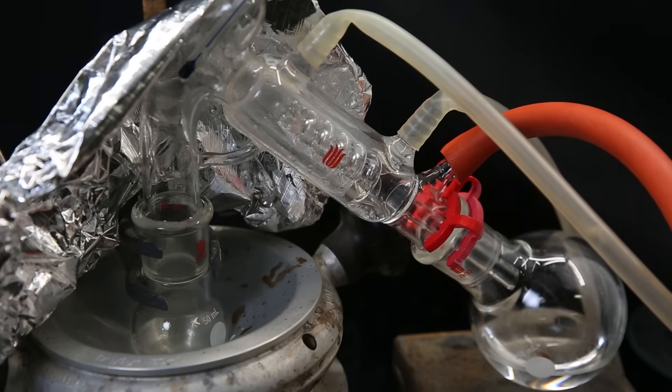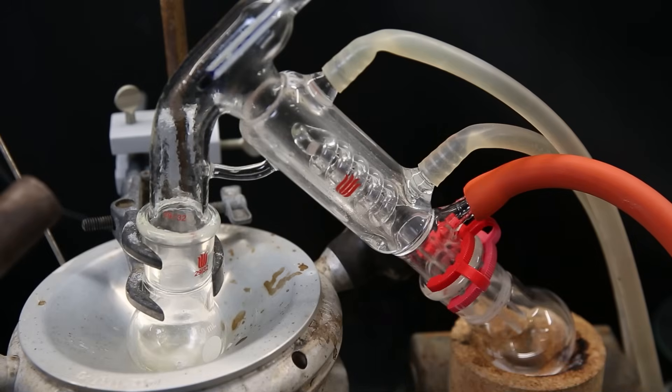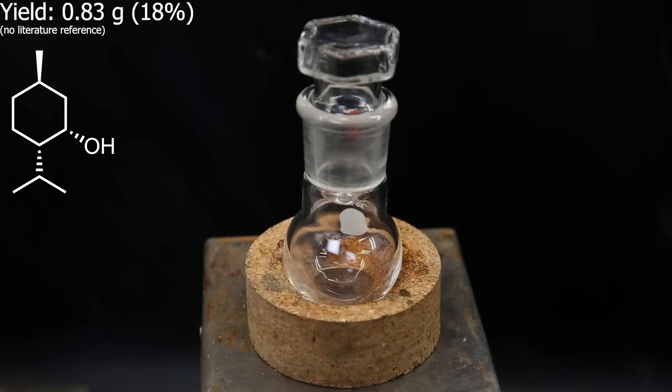By accident, I distilled over part of the product back into the hexanes, but the yield isn't really too relevant for this test. When the distillation is finished, I am left with 0.83 grams of a clear liquid, which should be mostly dextroneomenthol.